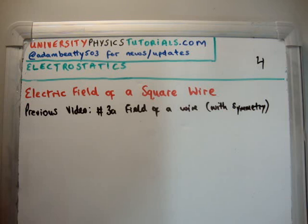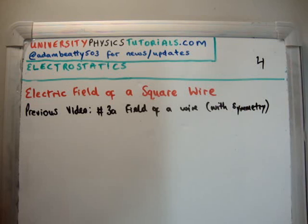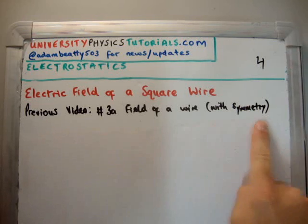So the previous video to this which is relevant is number 3A where I discussed the electric field of a wire which had symmetry. And in 3B I discussed the electric field of a wire without symmetry. And as you'll see in a moment we will require this video in order to do the current video.